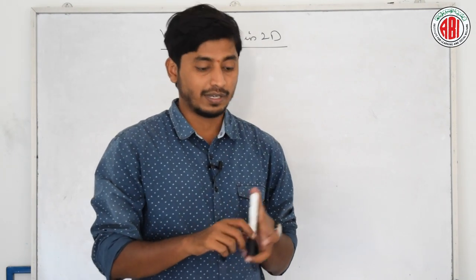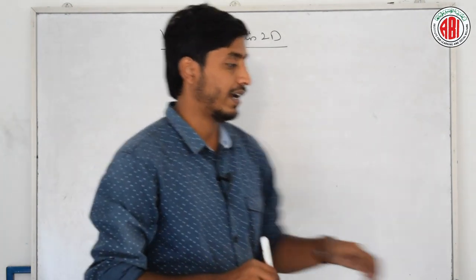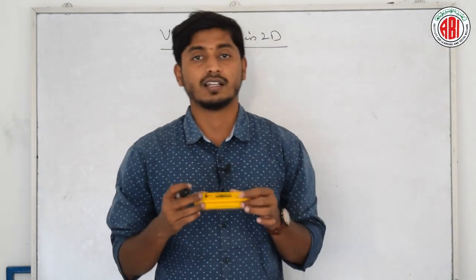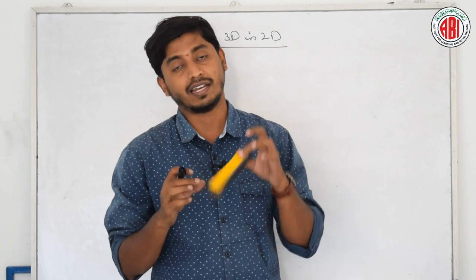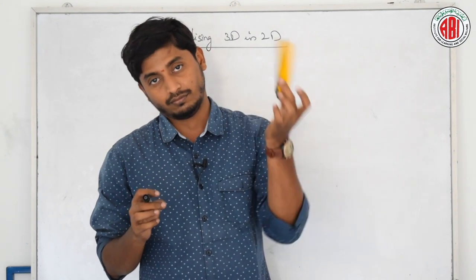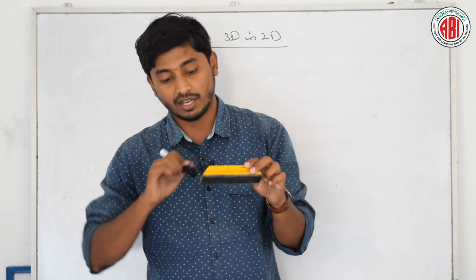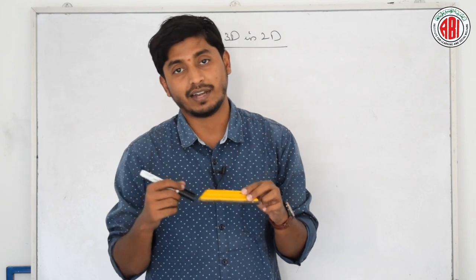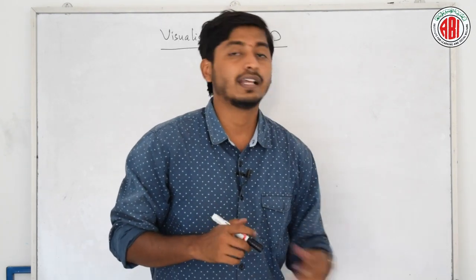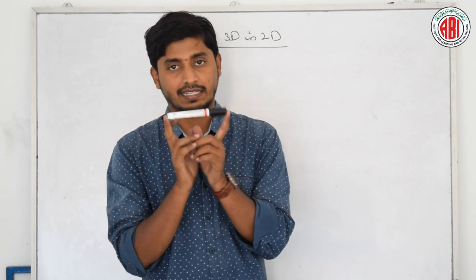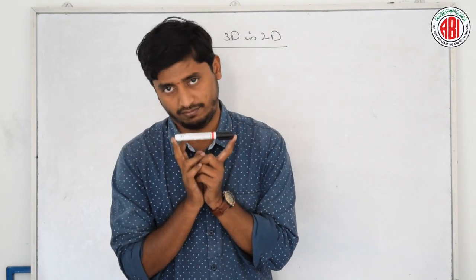For example, if I consider a duster, how many dimensions does it have? It is a 3D figure. I have to check what is the length, what is the breadth, and what is its height. If I consider a scale, it has only single direction. That is 1D.